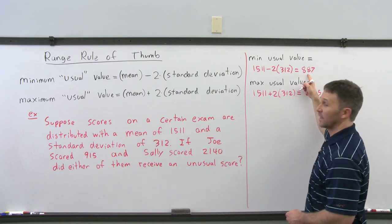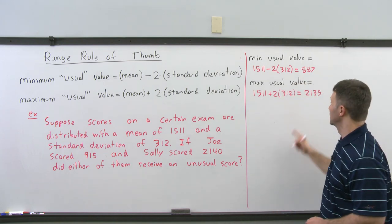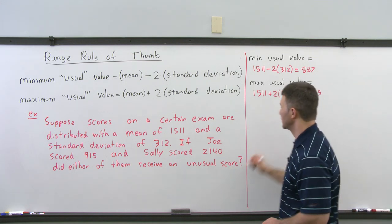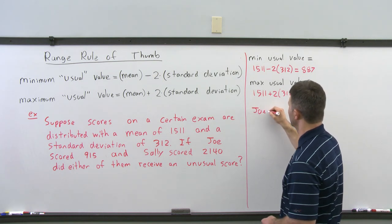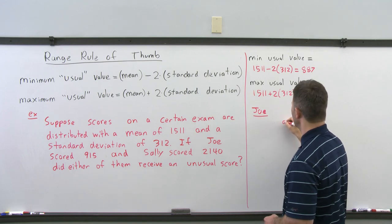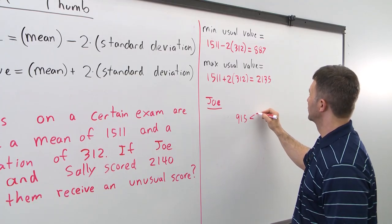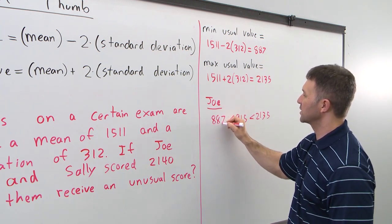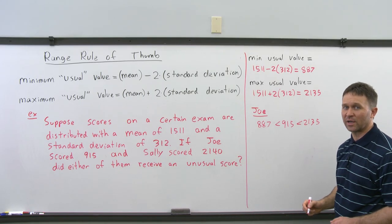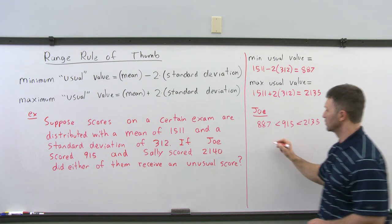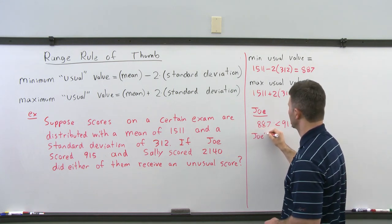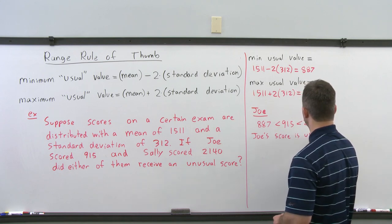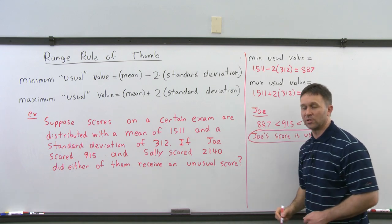The min usual value is 887 and the max usual value is 2135. Let's look at Joe's score — Joe scored 915. Since 915 is bigger than 887 but less than 2135, Joe scored between those values, so Joe's score is usual.